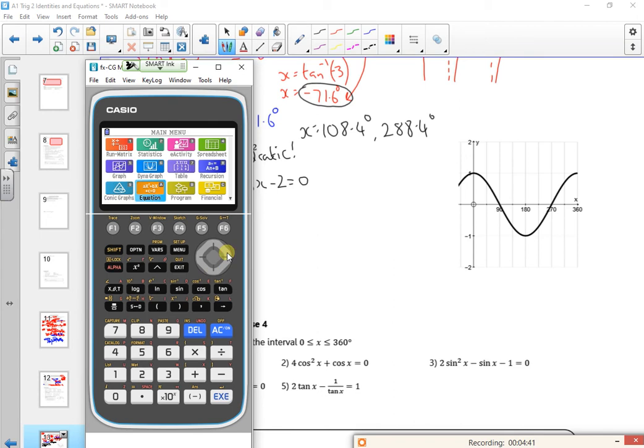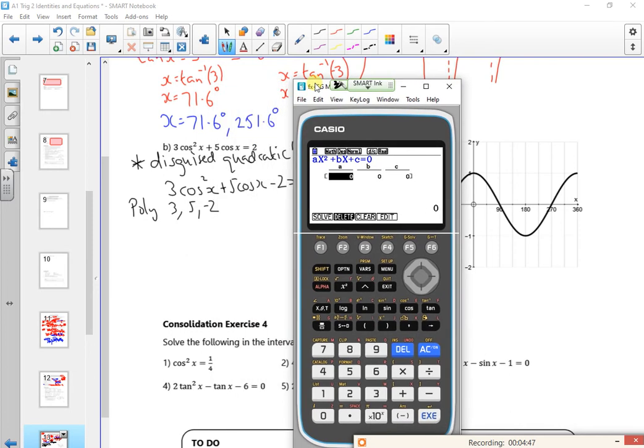So menu, down to equation, poly, degree 2. I forgot what numbers I'm putting in. So 3, 5, minus 2. Gives me a third, so I get a third out, or I get a minus 2 out.